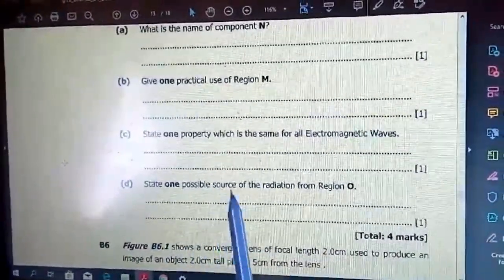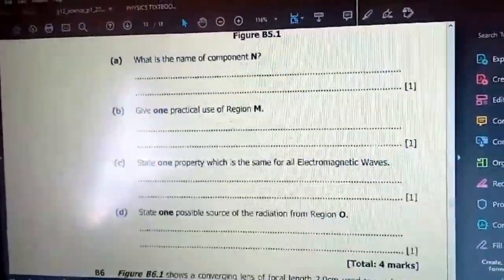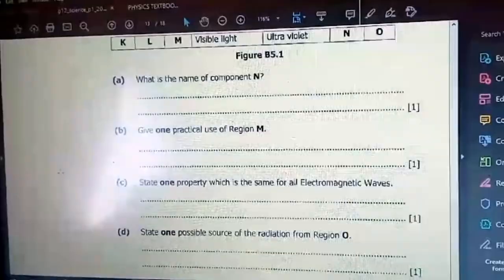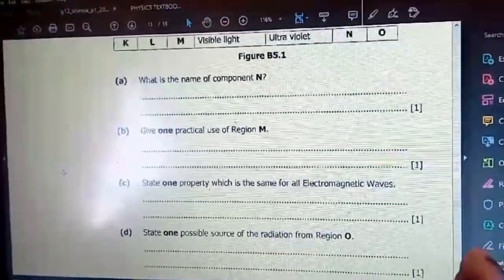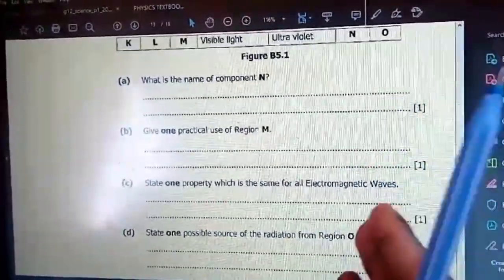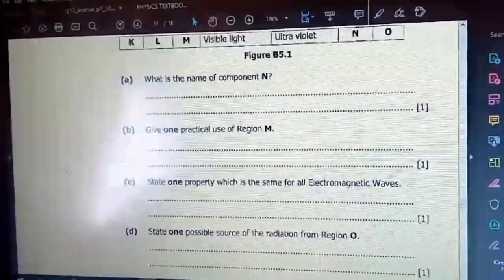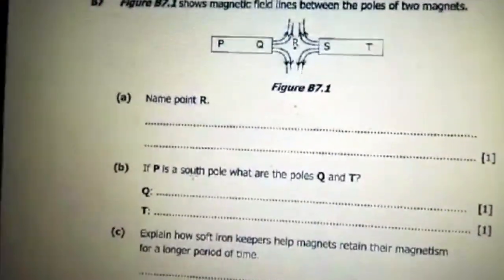State one possible source of the radiation from region O. Region O is gamma. On Earth, gamma waves are generated by nuclear explosions, lightning, and the less dramatic activity of radioactive decay, which is radioactivity.